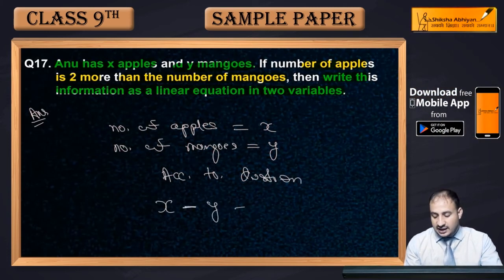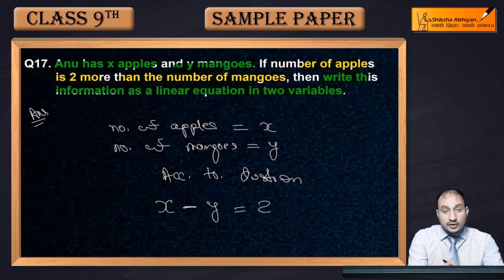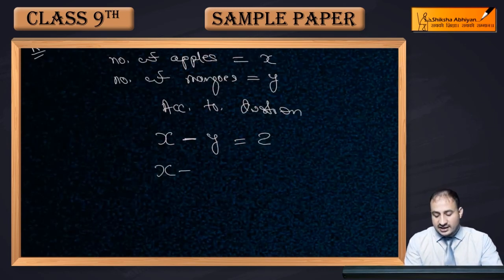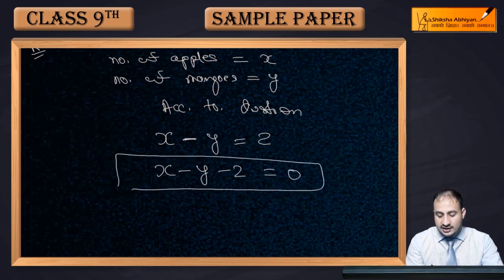x minus y will be equal to 2. And if we write this in standard form: x minus y minus 2 equal to 0. And this is our required linear equation in two variables.